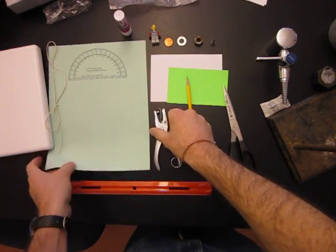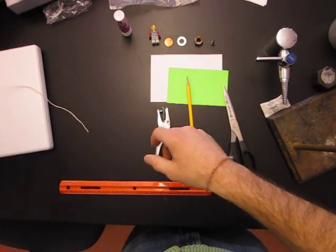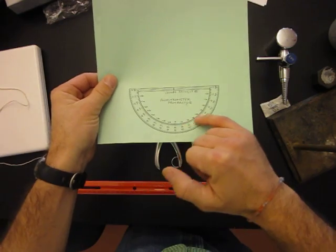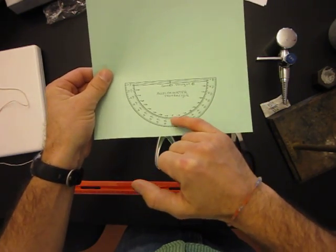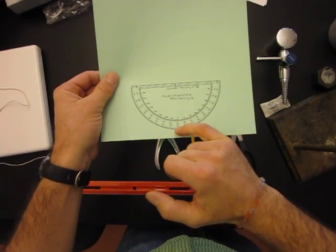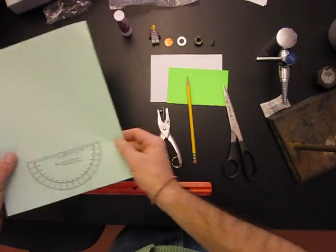You could print out several different ones on the internet. All you have to do is search for paper protractor and print it out. Now, I took this one and I numbered it a little differently, so that it has positive and negative numbers going up the sides with zero in the middle, where it hangs, and I'll show you how to use that once it's assembled.